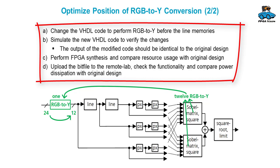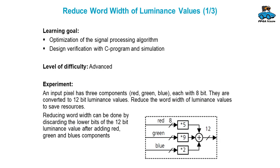For this experiment, you need to change the VHDL code to reflect the different positioning of this step, and you have to simulate the VHDL code to verify the changes. The output of the modified code should be identical to the original design, so you don't need to modify the test bench. Then you can perform FPGA synthesis, compare resource usage, upload the bit file to the remote lab, check functionality, and compare power consumption with the original design.